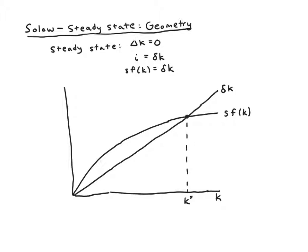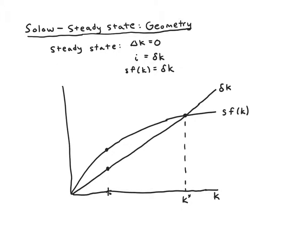The last thing we can do with this diagram is think about what if k wasn't at k*. What if it was down here, quite a bit less than the steady state. What would we expect to happen? Our level of investment would be up here, and our level of depreciation would be down here. We'd be gaining more new capital through investment than we're losing through depreciation, so we would expect capital to increase.